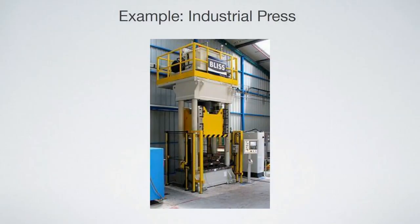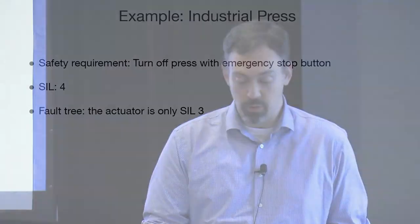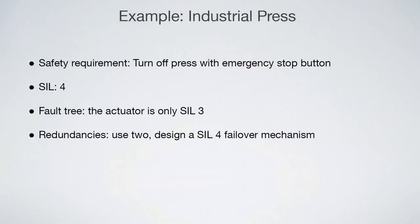A somewhat contrived example: suppose you have a huge industrial press and it's going to have an emergency stop button. Our safety requirement — that thing sure as heck better work. The safety integrity level, on the scale from 1 to 4 used in most standards, with 4 being the most severe — in this case we'll pretend it's 4 because it's definitely going to kill someone. But suppose when you take the system apart, there's the button, the wires going to the actuator, and a little control system. Maybe the actuator's failure rate, based on the supplier's data sheet, only makes it sufficient for safety integrity level 3. Well, we have to add redundancy — we'll use 2 actuators and design a very reliable failover mechanism to meet our requirements for safety integrity level 4.